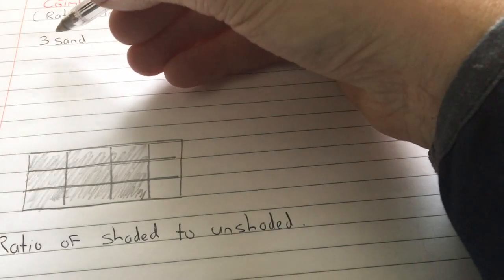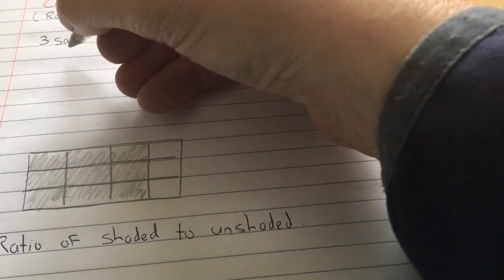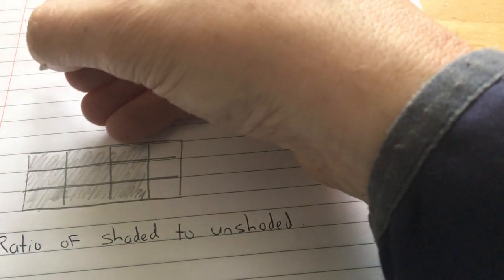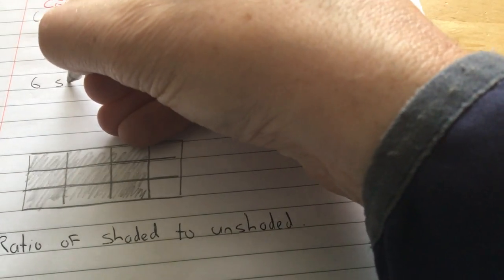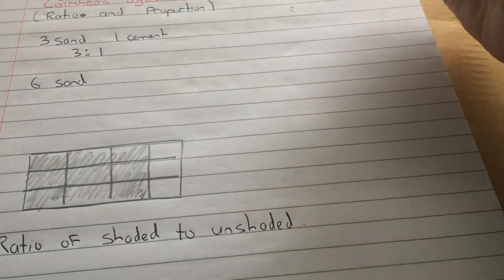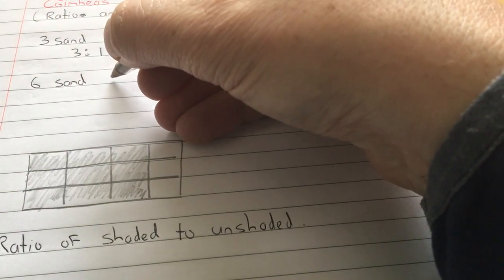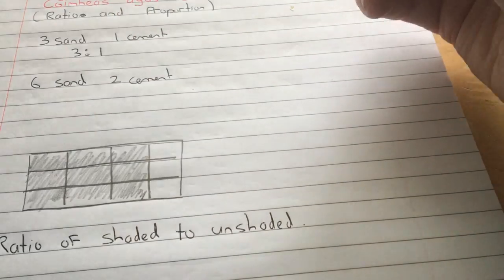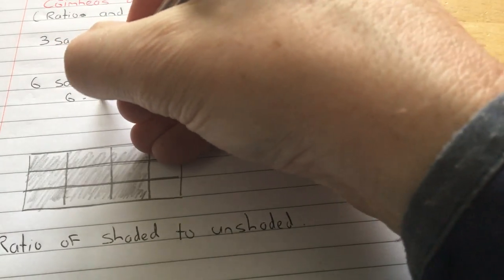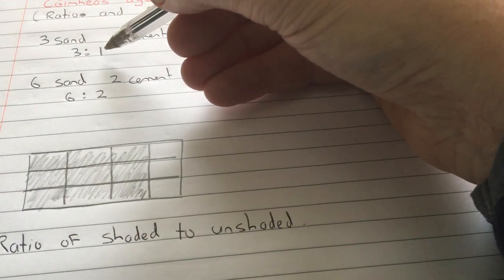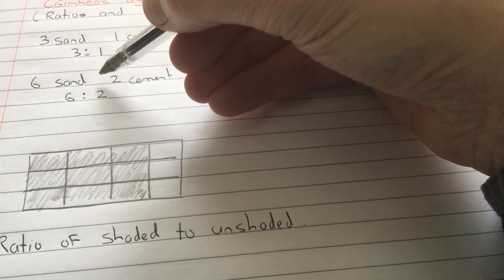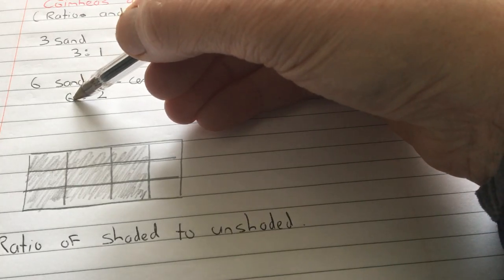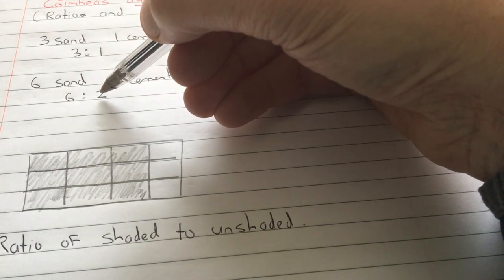And we write that, so you've got three times as much sand as cement. We write that three is to one. Now, that means that if you were to put in six shovelfuls of sand, you would have to put in two shovelfuls of cement. So that would be six is to two. But the ratio is the same. For every three shovels of sand, I put in one cement. So if I put in six sand, I put in two cement.